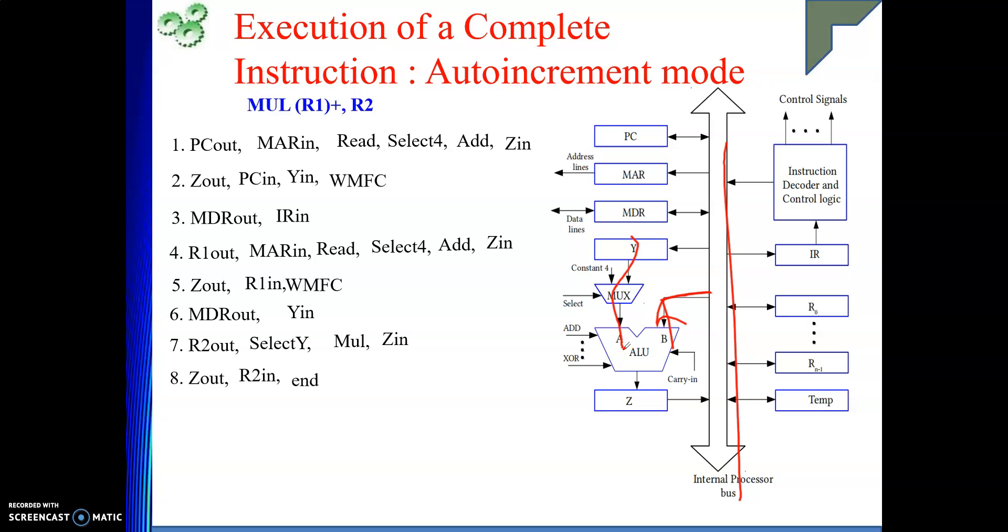Here, please remember the key points are. Whenever you are performing increment or decrement, that time, please do not go to memory. Only ALU is required. To get the operand, that time only go to memory. And get the operand and perform the operation requested. This is all about these two addressing modes control sequence. And if you are getting from my explanations, then please like my videos and subscribe to my channel. Thank you.